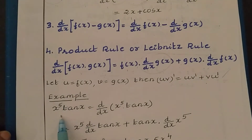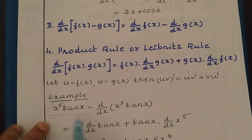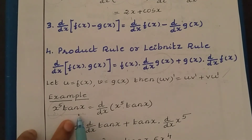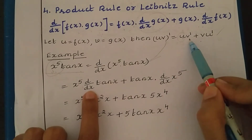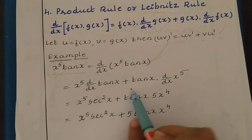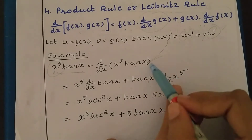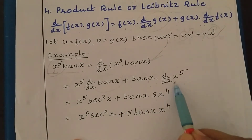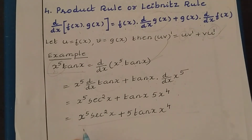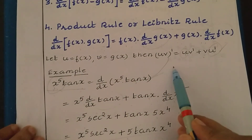Applying the product rule to x^5·tan x: we have f(x) = x^5 and g(x) = tan x. So: x^5·(d/dx of tan x) + tan x·(d/dx of x^5) = x^5·sec²x + tan x·5x^4. The final answer is x^5·sec²x + 5x^4·tan x.